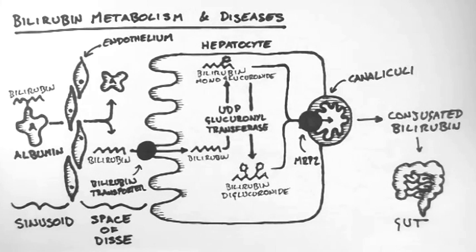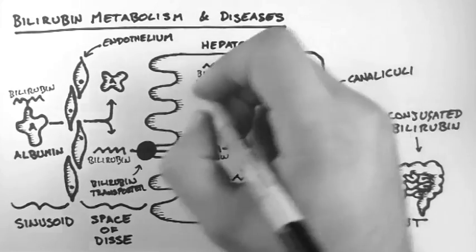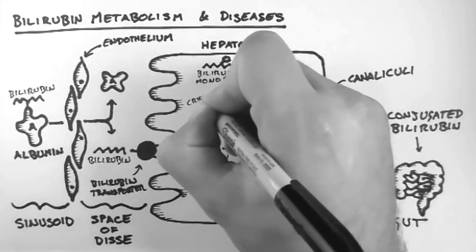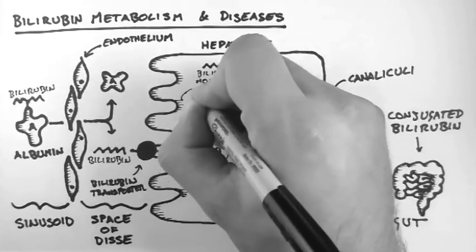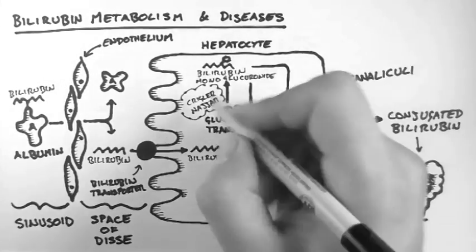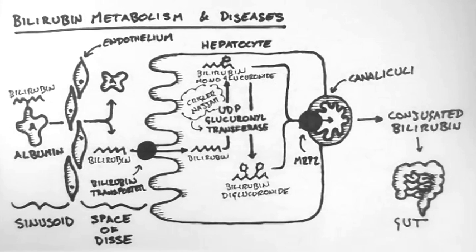Now I want to talk about the hereditary diseases associated with failure of metabolism. The first is a particularly nasty and rare disease called Crigler-Najjar syndrome. This is the result of a lack or major deficiency in UDP glucuronyl transferase. This causes a build-up of unconjugated bilirubin in the blood, which is toxic to the brain and causes encephalopathy in newborns with this condition.